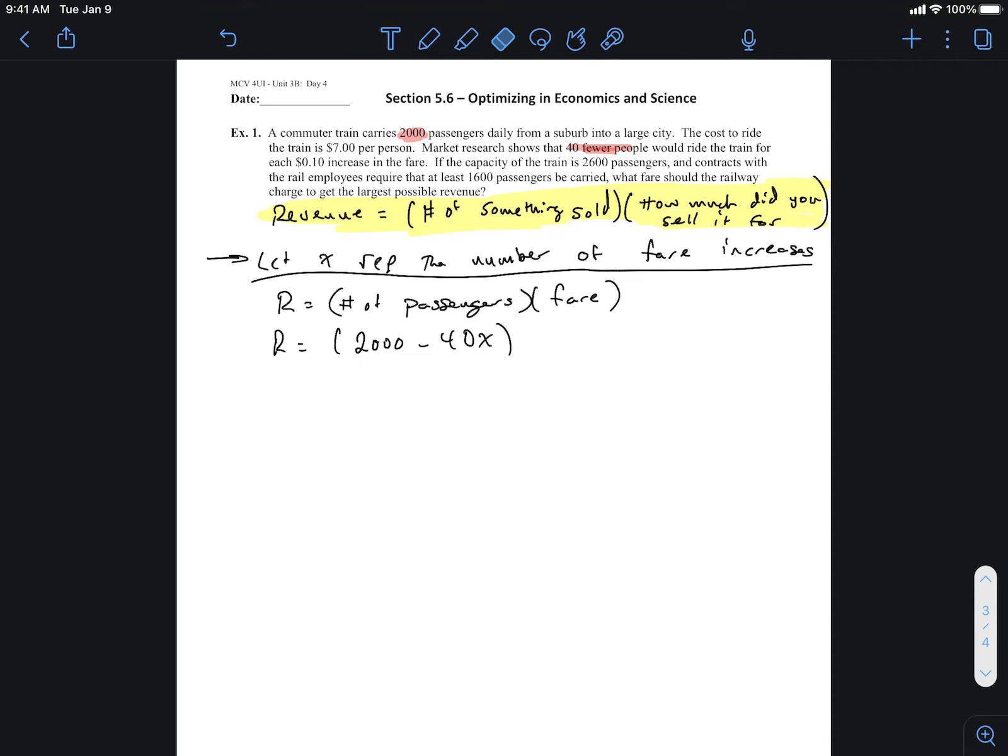Now what's actually happening with the fare? Well, where do we start with the fare? Originally it costs $7 per person, so $7, and then we're going to add 0.1 cents X number of times. And we end up, if we were to expand this out, we would see that we'd get a quadratic. So we'd see that we get 14,000 minus 80X minus 4X squared.